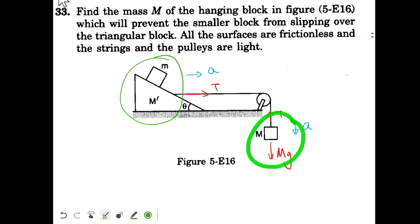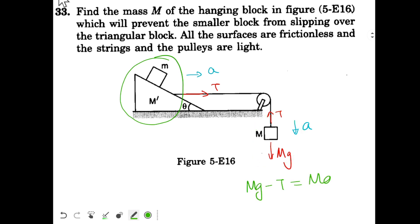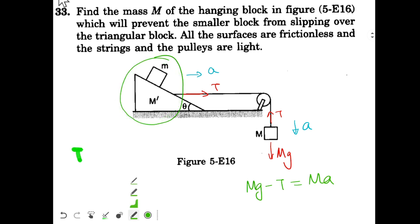For this block I can write down that mg minus T equals ma. And for this system of m plus M-dash I can write down T equals m plus M-dash multiplied by a.